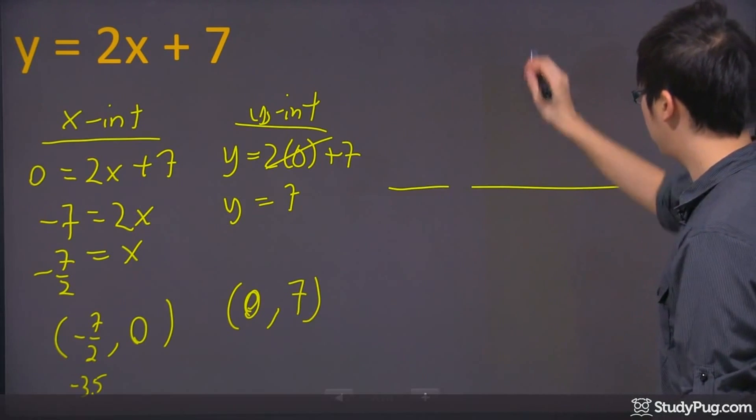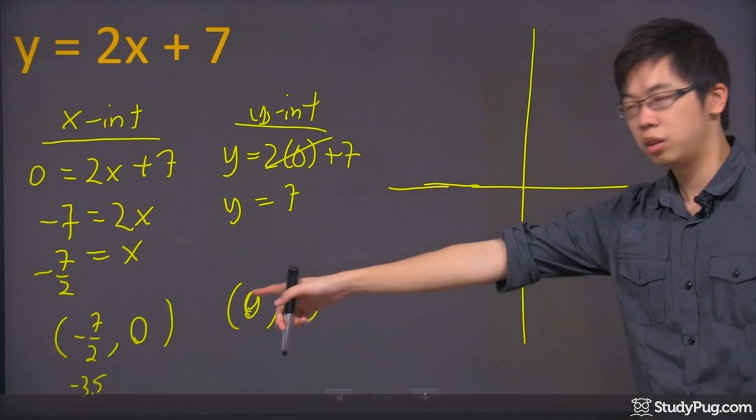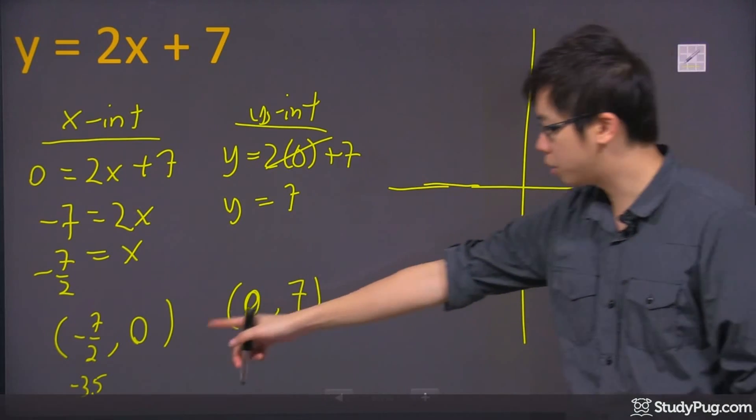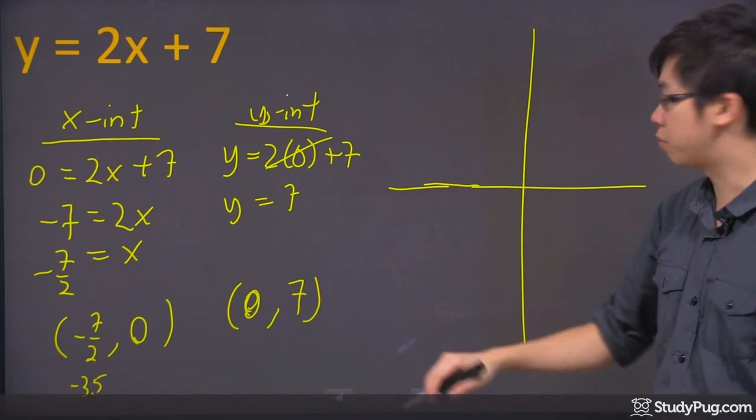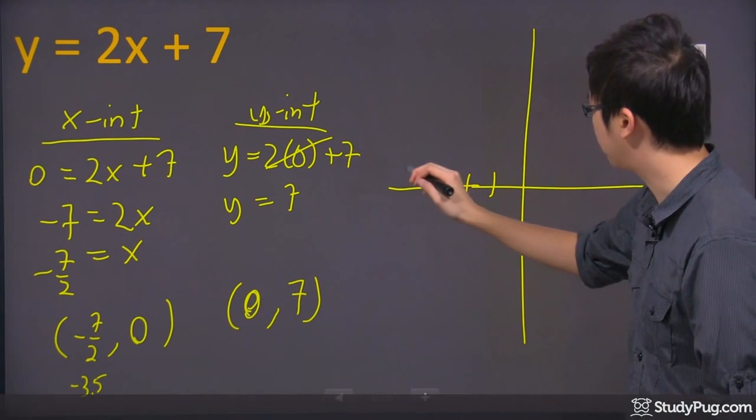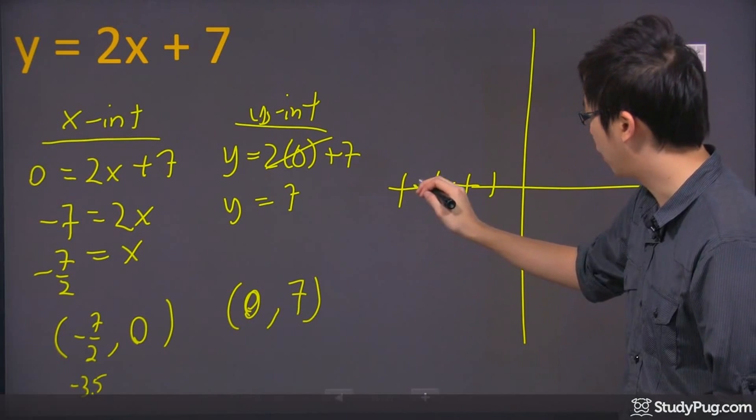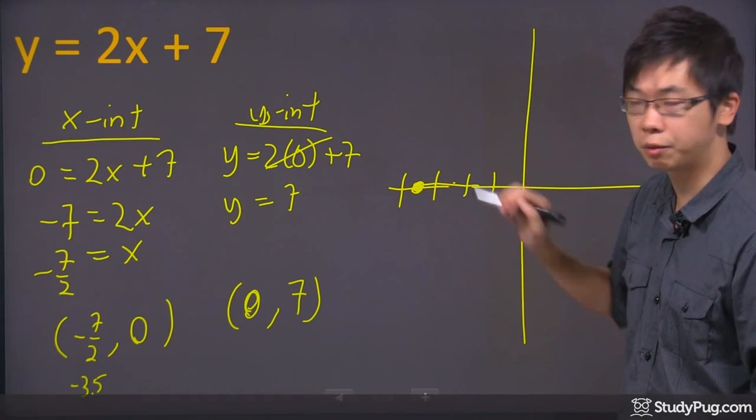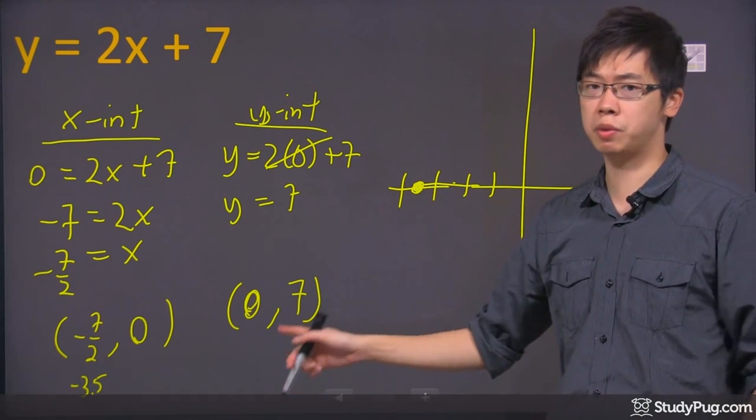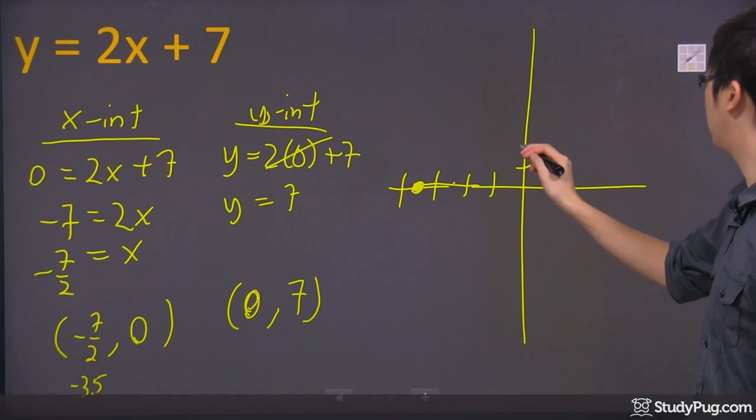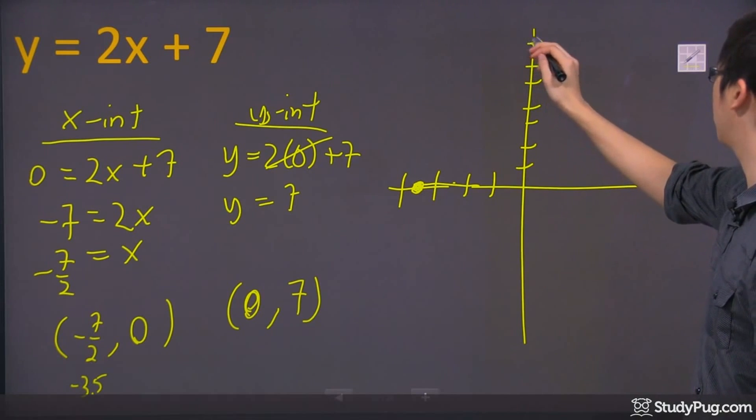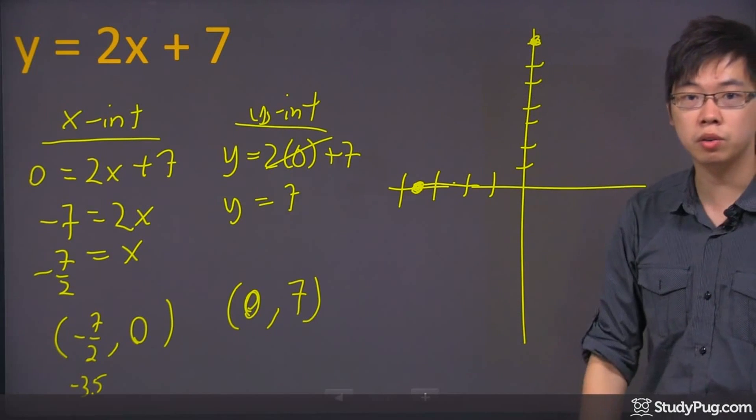So on the graph, you will have negative 7 over 2 and zero, that's negative 3.5. So this is one, two, three, four - the 3.5 is somewhere over here. So there's an x-intercept right there. The y-intercept is (0, 7). So if you go one, two, three, four, five, six, seven, there's another point right there, that's your y-intercept.